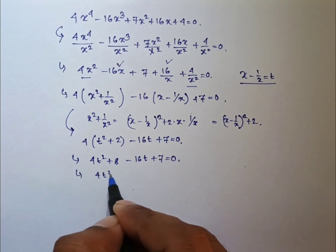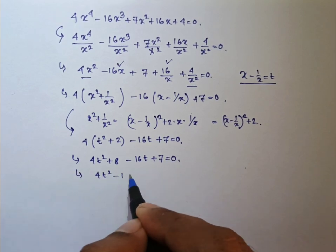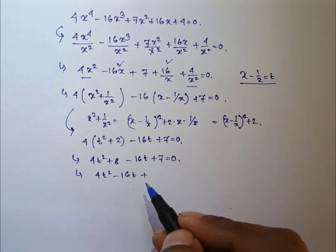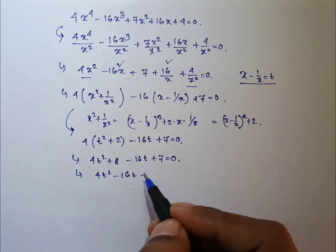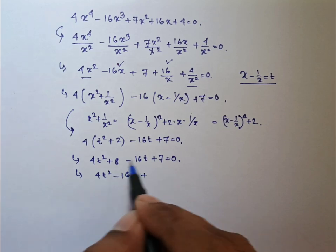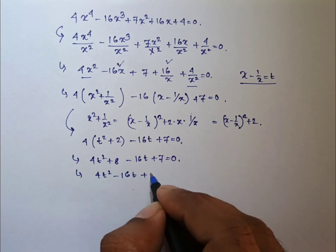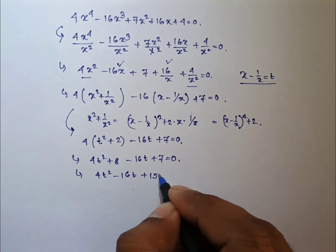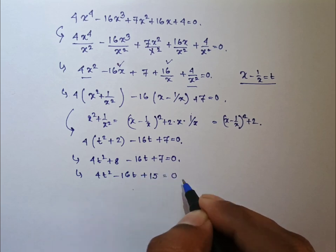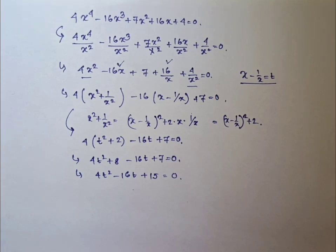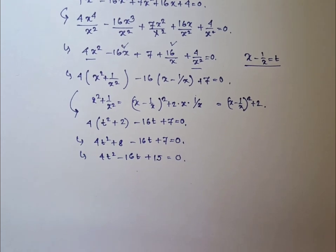That is, 4t square minus 16t plus 8 plus 7 is 15. So it is 4t square minus 16t plus 15 equal to 0.